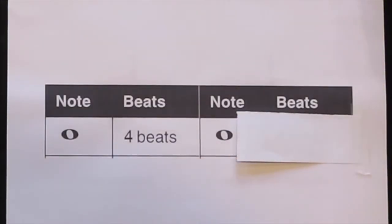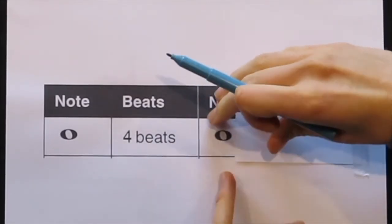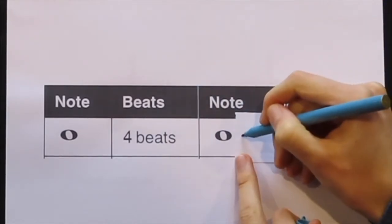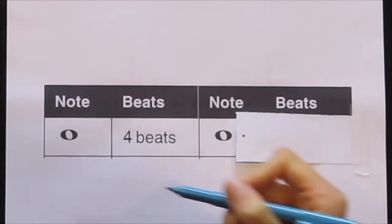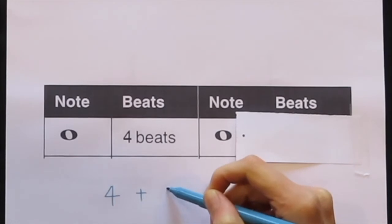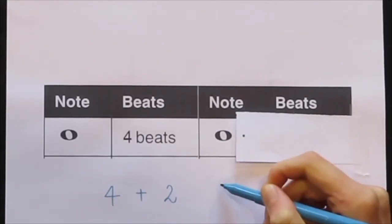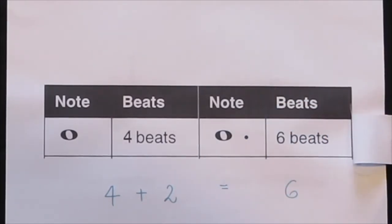Now let's have you try. If a semi-breve is 4 beats, how many beats do you think a dotted semi-breve would be? 4 plus 2 equals 6. So a dotted semi-breve will have 6 beats.